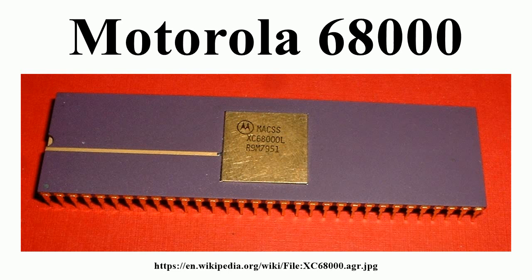The 68000 was used in the first generation of desktop laser printers, including the original Apple LaserWriter and the HP LaserJet. In 1982, the 68000 received an update to its ISA allowing it to support virtual memory and to conform to the Popek and Goldberg virtualization requirements.